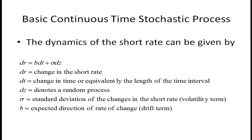Let's look at the dynamics of the short rate, which falls under the heading of a stochastic differential equation. The equation is dr = b·dt + σ·dz. Here dr is the change in the short rate, b is the expected direction of rate change — the drift term, dt is the change in time or the length of the time interval, and σ is the standard deviation of changes in the short rate — our volatility term.